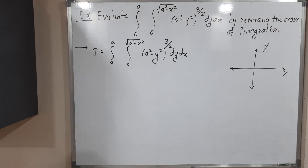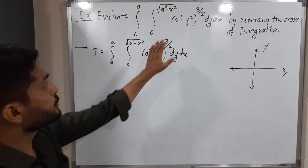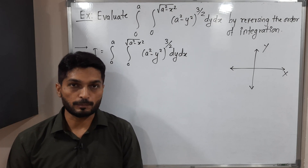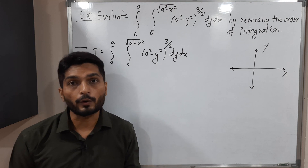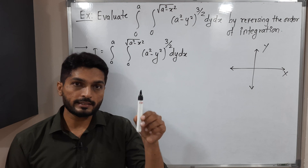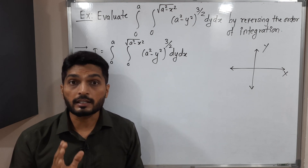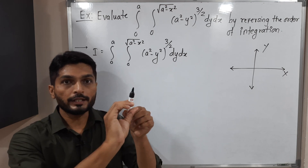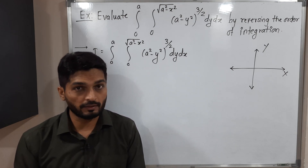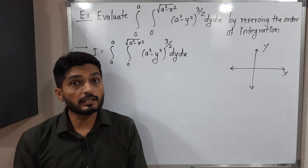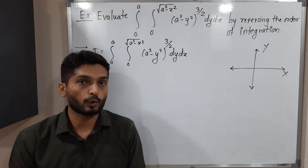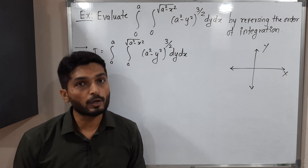In this video we are going to discuss this example where we have an integration to solve by reversing the order of integration. Reversing the order means: in double integration we have a strip either parallel to the y-axis or x-axis. If the given strip is parallel to the y-axis, we consider a strip parallel to the x-axis instead, and vice versa.